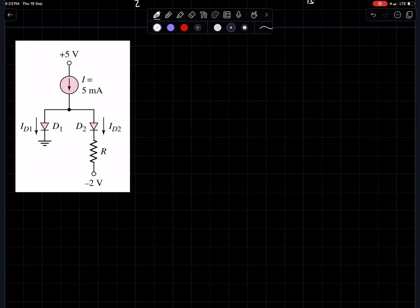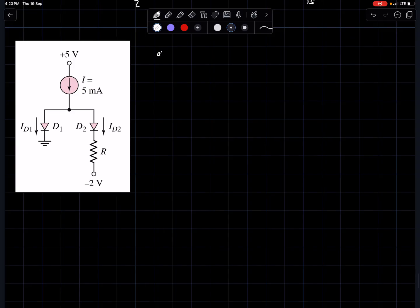This is another basic diode problem. It asks to find the value of R when both diode currents id1 equals id2.